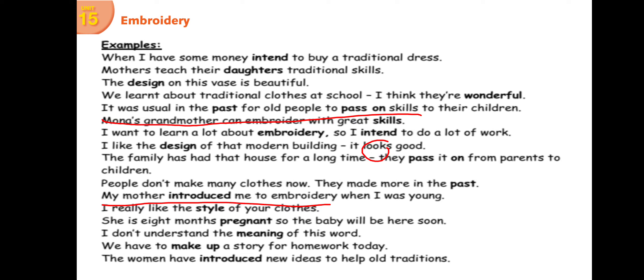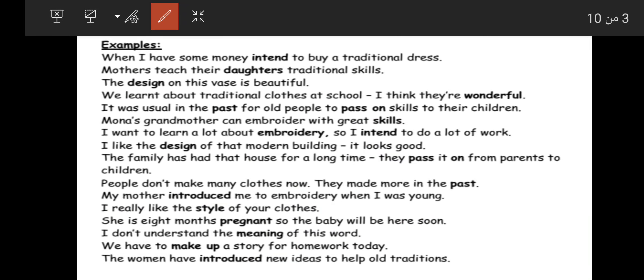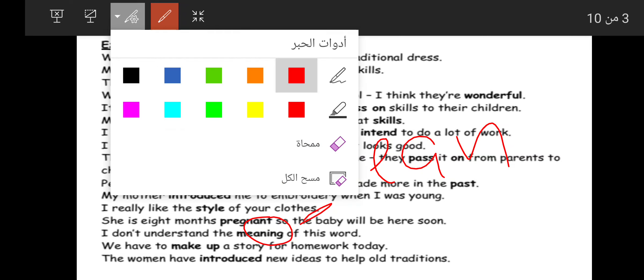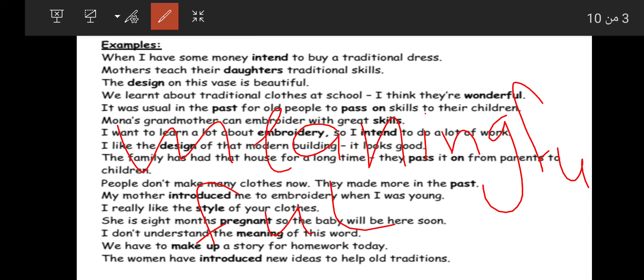'I don't understand the meaning of this word.' Note about the word family: 'mean' is the base verb meaning يقصد. From 'mean' comes 'meaning' — معنى. Adding 'full' gives 'meaningful' — meaning ذو معنى, as in 'a meaningful sentence' — جملة لها معنى، جملة بتنفهم.